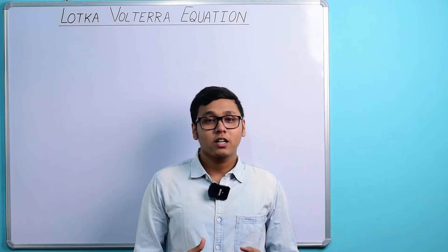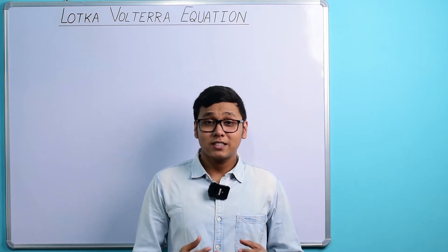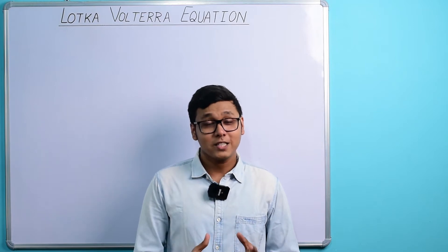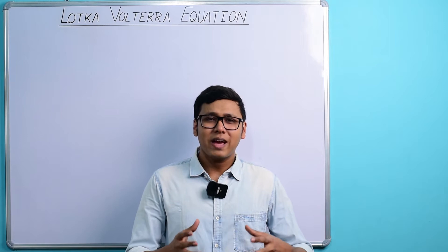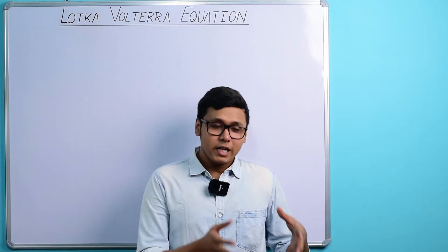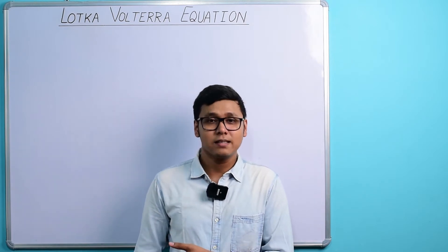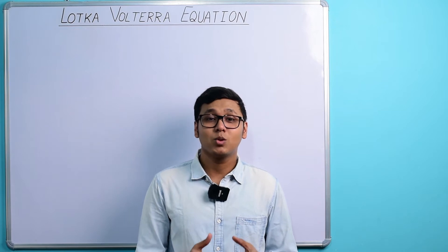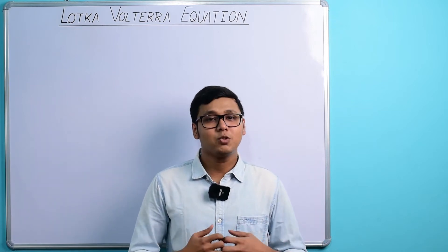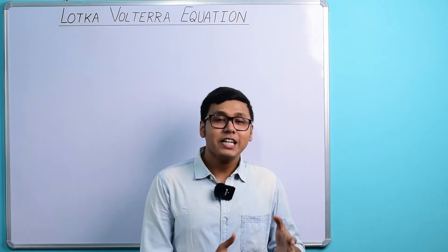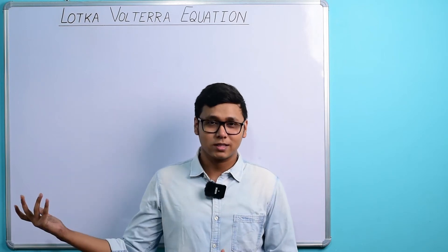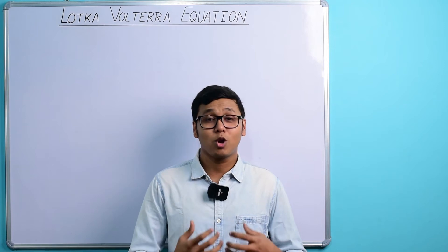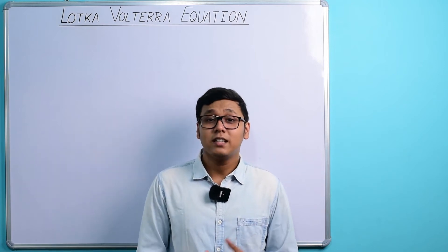What does the Lotka-Volterra competition equation mean? This can be understood by considering a simple philosophy: we don't live in a perfect world and we have to fight for whatever we want to get, and this fight is known as competition. Suppose a population of any organism in a community — the individuals in that population have to fight with other individuals of the same species for limited resources, for example mates and food. This type of competition is known as intraspecific competition, where both competing individuals belong to the same species. At the same time, individuals have to fight with individuals of other species for resources, and that type is known as interspecific competition. An example is territorial behavior.